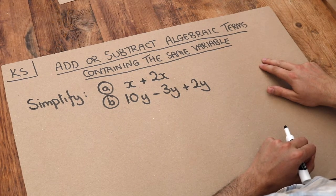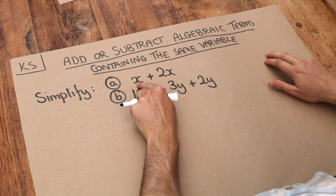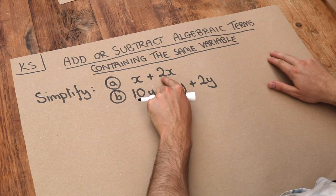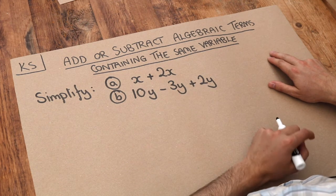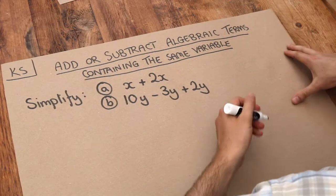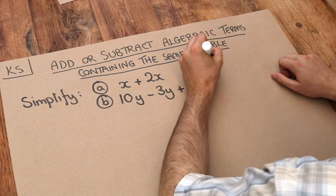And the easiest way is to just think about it in words. Here we've got x plus 2x. So if I have one lot of x and I add two lots of x, then I would have three lots of x. So that would just be 3x.